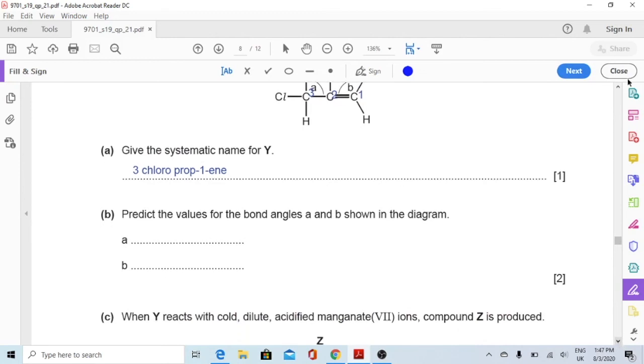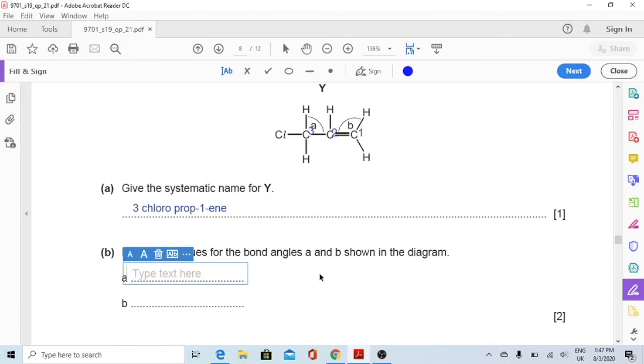Now part B, predict the values for the bond angles A and B shown in the diagram. The most appropriate angle between C to H would be 109.5. This carbon forms a bit of tetrahedral shape with the other atoms bonded to it like hydrogen, chlorine, this hydrogen, and then this carbon. And then angle B would most likely be 120 degrees because this has three atoms or three species bonding to it. There is hydrogen, this hydrogen, and then this carbon.